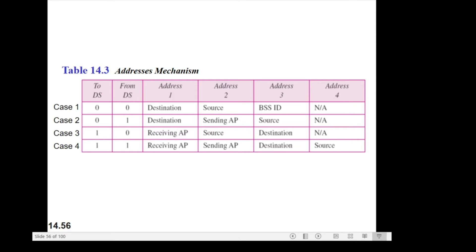Case number three: To DS is equal to 1, From DS is equal to 0. This means the frame is going to a distribution system. The frame is going from a station to an access point, and the acknowledgement is sent to the original station.